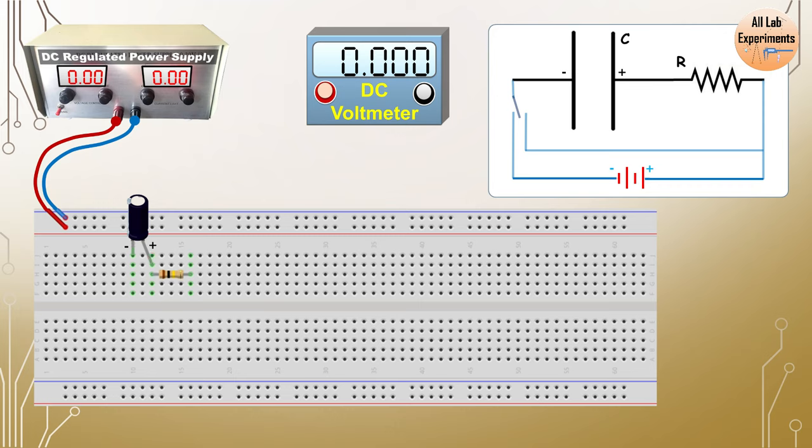But the one which we are using here has a polarity, so we are going to connect the positive of the battery to the positive of the capacitor. But we want to charge this capacitor through a resistance.